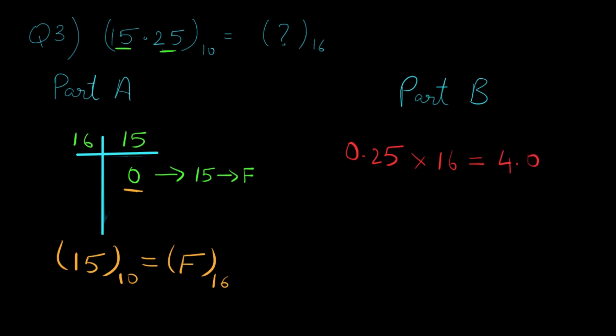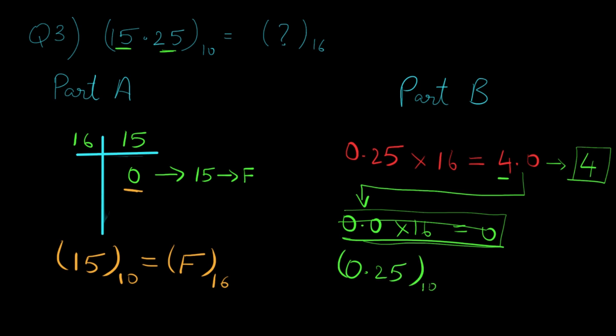Here we are interested in the integer part, so we write it separately and ignore it for the next iteration, which leaves us with 0.0 for the next iteration. If we multiply this with 16 we are again going to land up with 0, so we ignore this step and we have got our answer, that is 4. So 0.25 in decimal is equal to 0.4 in hexadecimal.